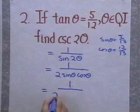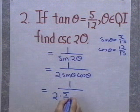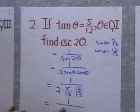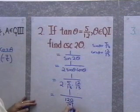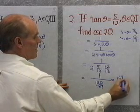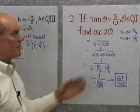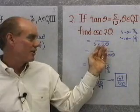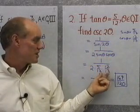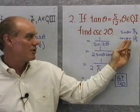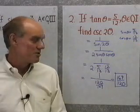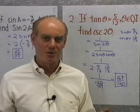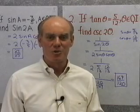So I'll continue: 1 over 2 times (5/13) times (12/13). I end up with 1 over (2 × 5 = 10, × 12 = 120, divided by 13 × 13 = 169). Taking the reciprocal, that's 169/120. So here's a problem where I'm given the tangent of an angle and asked for the cosecant of twice that angle. I go from cosecant to sine of twice the angle, use my double-angle formula 2 sin(θ) cos(θ), substitute 5/13 and 12/13, and the result is 169/120. These problems are just for practice, to get you used to working with double-angle formulas.